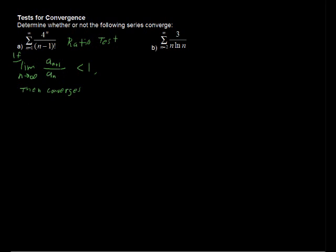Okay so let's look at what we have here. We have when n is n plus 1, so a_{n+1} equals 4 to the n plus 1 over n plus 1 minus 1 factorial. And a_n equals 4 to the n over n minus 1 factorial. I'm going to put a fraction bar between those two and we're looking at this ratio.